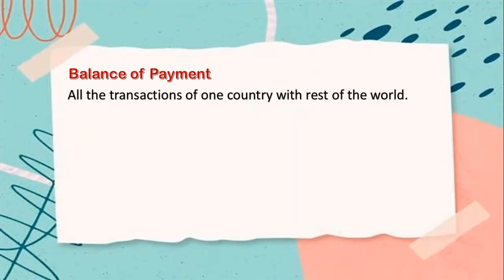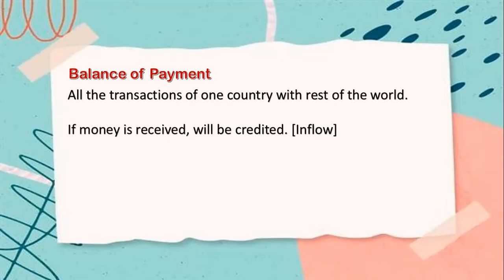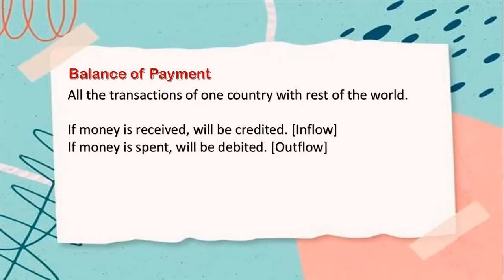When we talk about balance of payment, we basically mean all the transactions of one country with the rest of the world. Think about how much money is flowing into your country every year and how much money is flowing out. When doing international trade, either money is coming in or going out. If money is received, it will be credited and known as inflow; if money is spent, it will be debited and known as outflow.